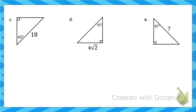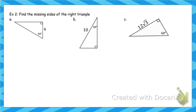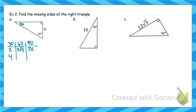Now we'll do the same process with the 30-60-90 ratio. One side is given here — 4 is across from the 30-degree angle. Making our chart: 30, 60, 90 with ratio x, x√3, 2x. Since 4 is in the 30 column, x equals 4. Replacing x: across from 60 is 4√3, and across from 90 is 2 times 4, which is 8.